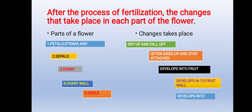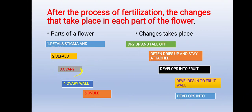Good morning class. In the previous lesson we learned about the changes that take place in each part of the flower after fertilization. The petals, stigma, and anthers dry up and fall off. Sepals often dry up and stay attached. The ovary develops into a fruit, the ovary wall develops into a fruit wall, and the ovule develops into a seed.